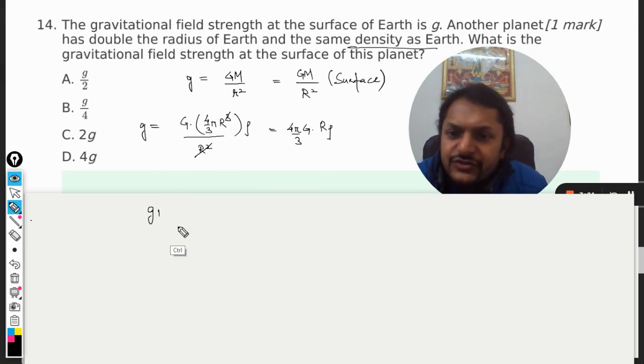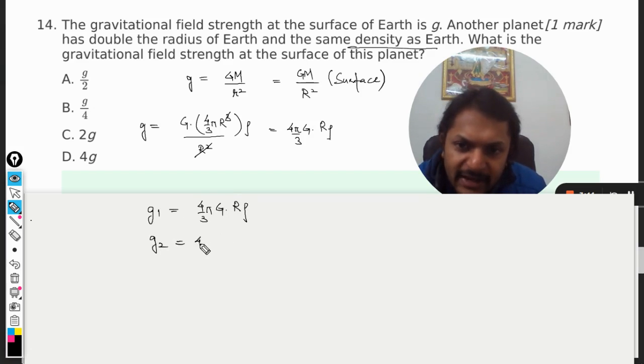And what about the second planet, the other one? 4 pi by 3 into G, that's the constant, radius - now it's saying that the radius is doubled, density is kept the same.